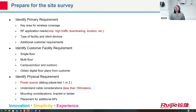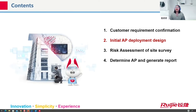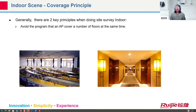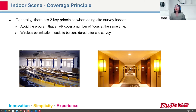This is the preparation for doing a site survey for the customer network. For the initial AP deployment design, we have some principles. For the indoor scenario, we have to consider the coverage principles. There are two key principles when doing site surveying indoors — for example, like meeting rooms for a campus or a hotel. The first one is we have to avoid one AP covering multiple floors at the same time. The second one is that wireless optimization needs to be considered after the site survey.